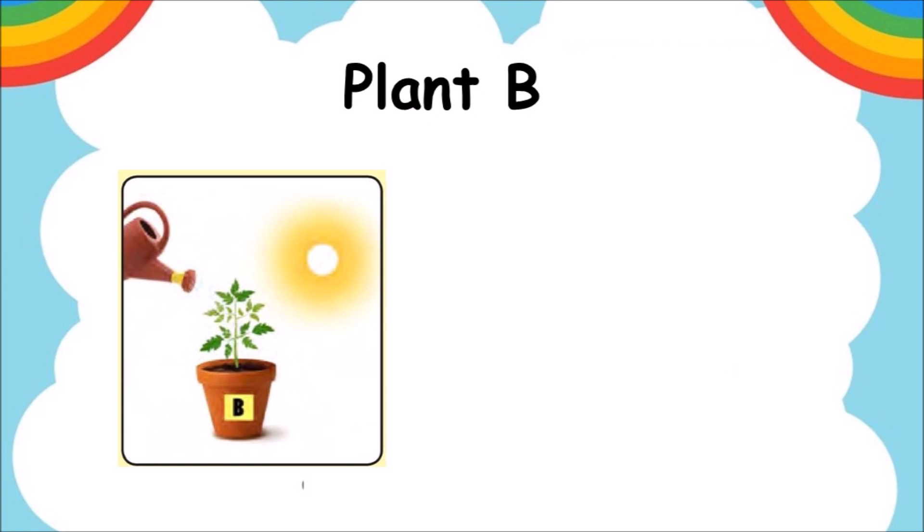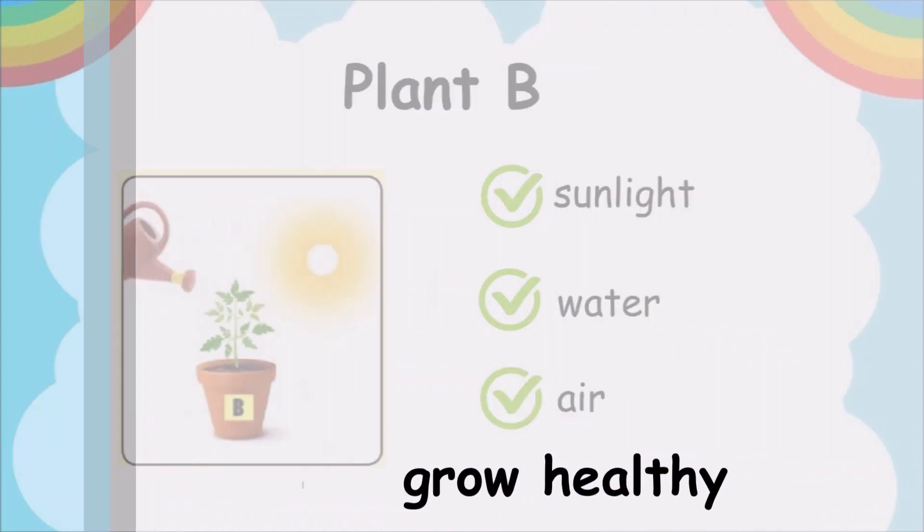Now let's look at Plant B. Plant B receives sunlight, water, and air - all three basic needs. What will happen to Plant B after 2 weeks? It will grow healthy.